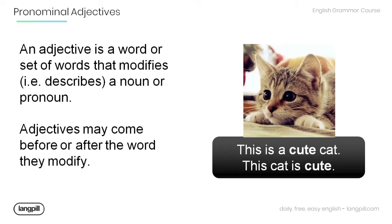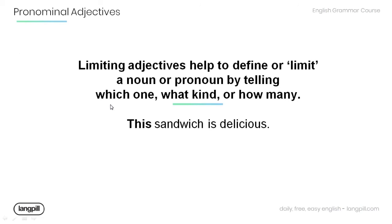Note that adjectives may come before or after the word they modify. Have a look at the example: 'This is a cute cat' and 'This cat is cute.' The word 'cute' is an adjective used to describe the noun 'cat.' In the first sentence the adjective comes before the noun, and in the second sentence it comes after.